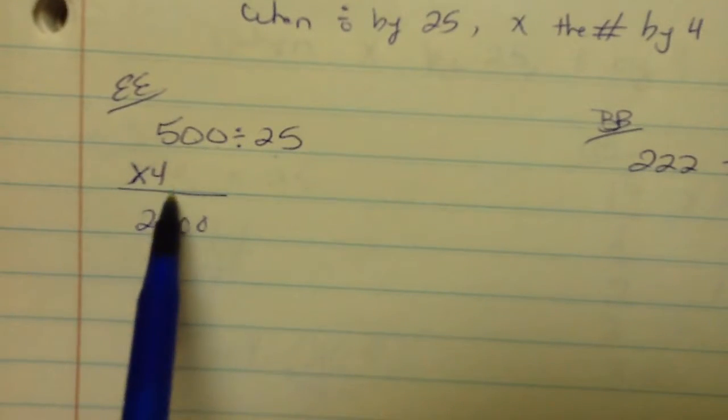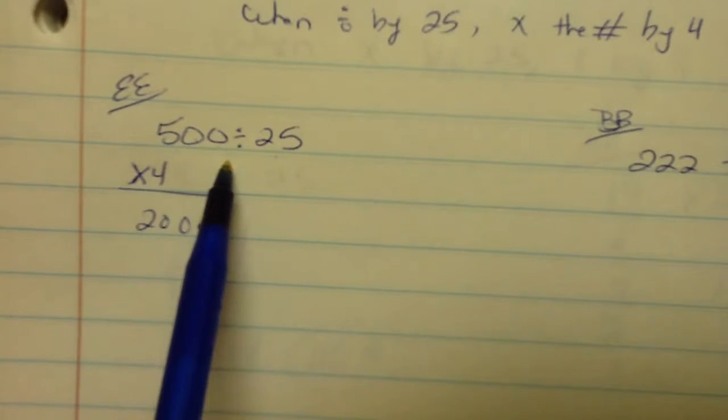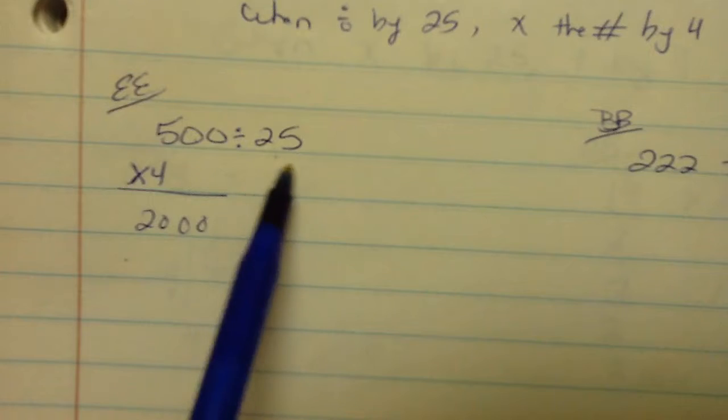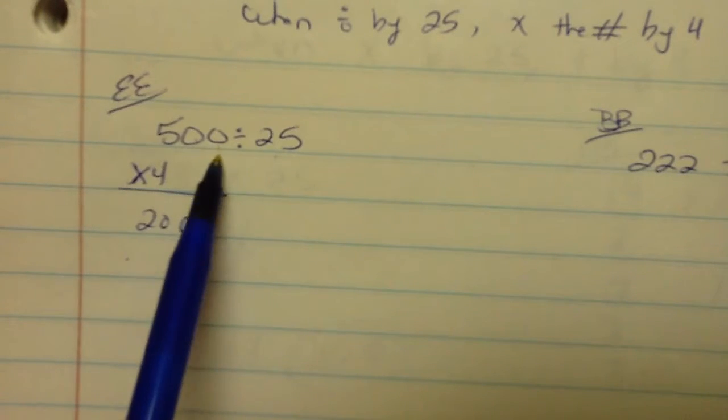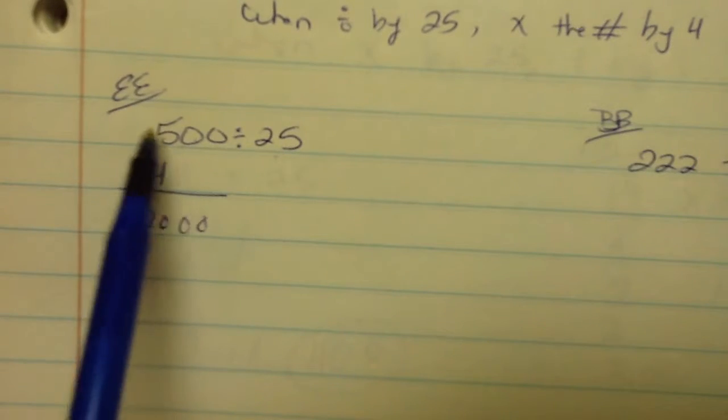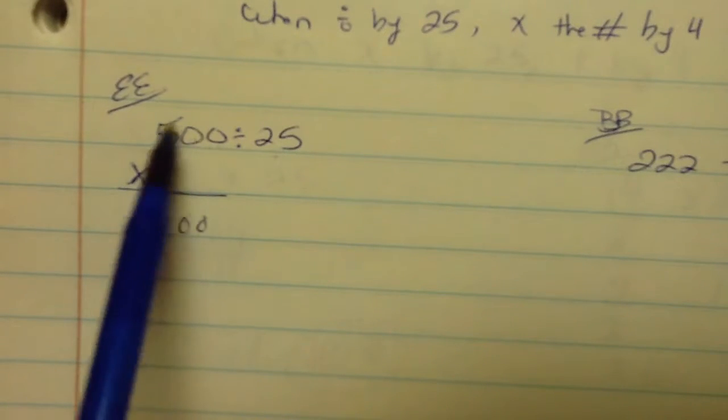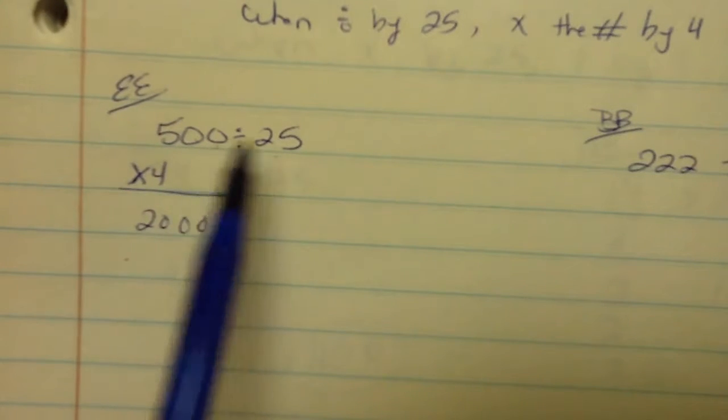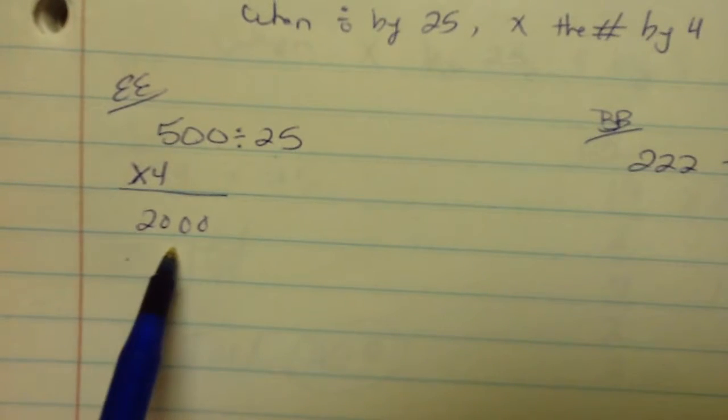Now let's check for reasonableness. 500 divided by 25, 2,000, right? That makes sense? No, it doesn't. Because when you're dividing, you know you're going to get a number that's smaller. Remember that dividing means you're breaking that number up. You're separating 500 into 25 parts. And if you're separating 500 into 25 parts, you're certainly not going to get a huge number like 2,000. You're going to get a really small number.